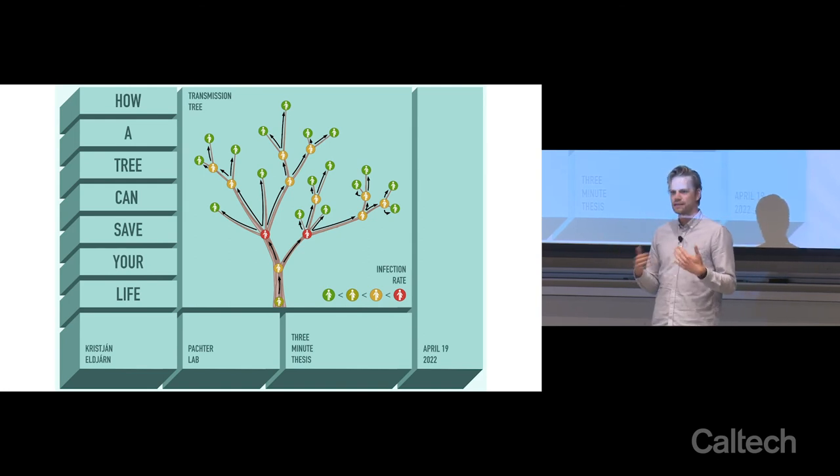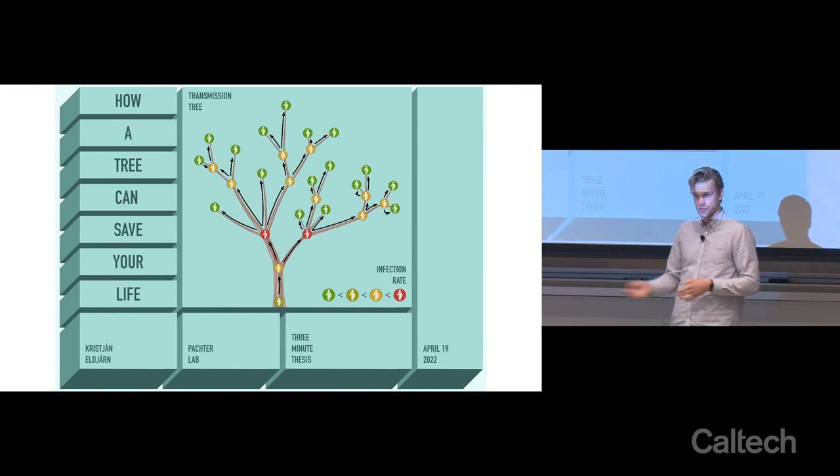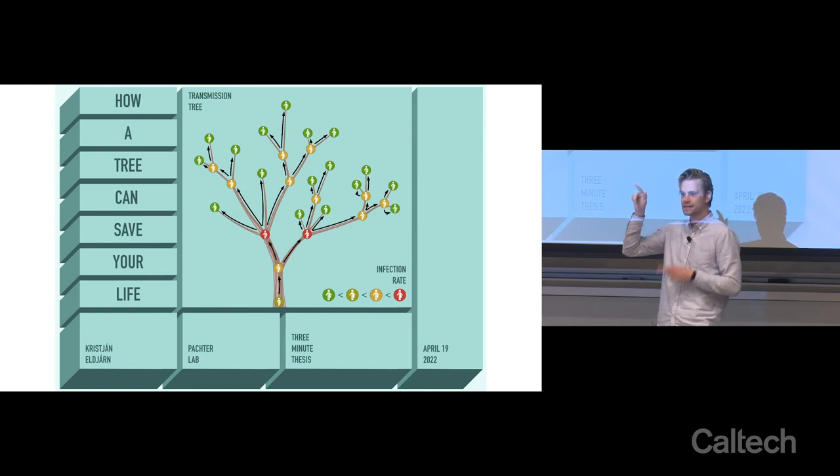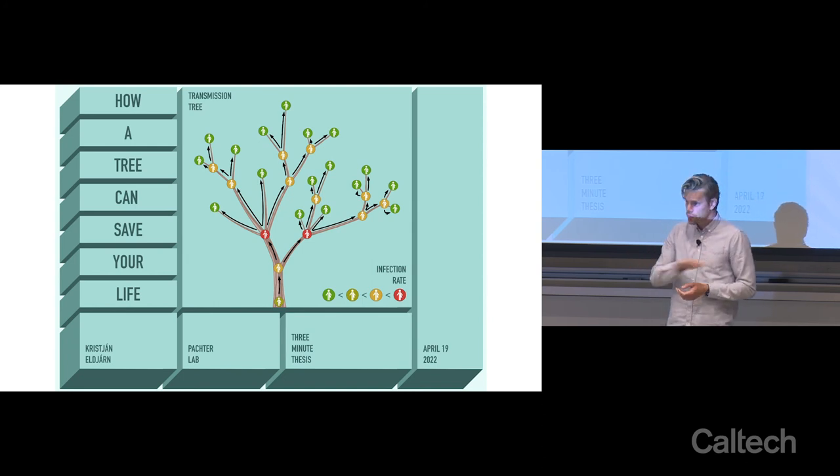So we simulated different vaccination strategies on our transmission tree by strategically selecting people to be immune and then pruning all the branches stemming from them. We showed that vaccinating a population uniformly at random is substantially better than vaccinating a population in order of descending age.